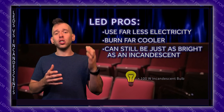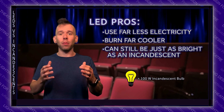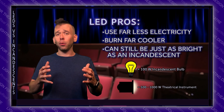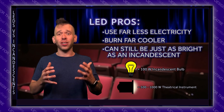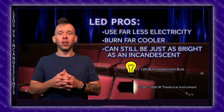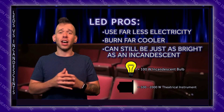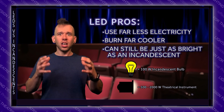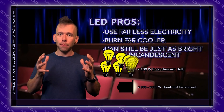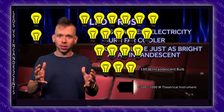In comparison to a standard 100 watt bulb, theatrical incandescents often pull 500 to 1000 watts of power, and sometimes even up to 2000 watts of power — which is like 20 100-watt light bulbs all on at once.